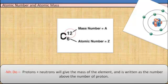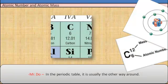Protons plus neutrons will give the mass of the element and is written as the number above the number of protons. In the periodic table, it is usually the other way around.